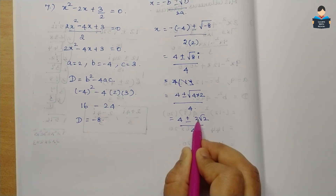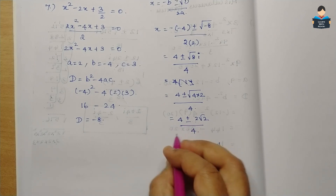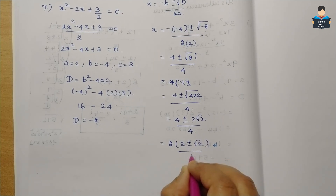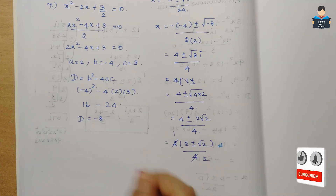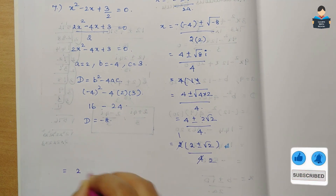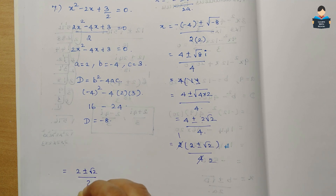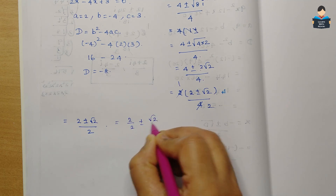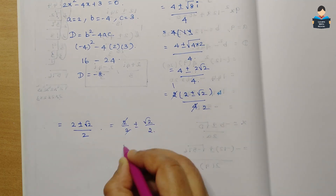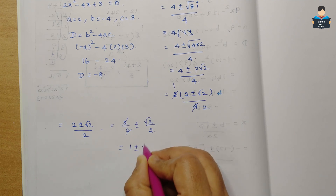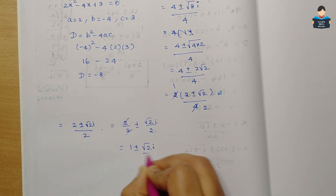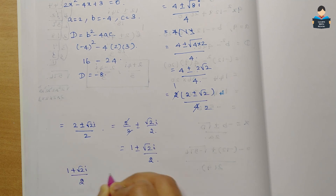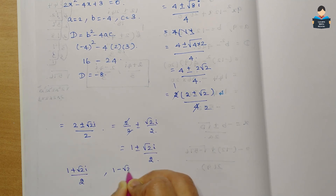4 is divisible, so take 2 as common: x = (2 ± √2 i) / 4 × (1/1). Simplifying, 2 divides both top and bottom: x = (1 ± √2 i) / 2. So the two solutions are x = (1 + √2 i)/2 and x = (1 - √2 i)/2.